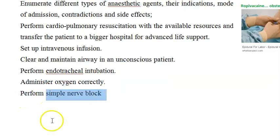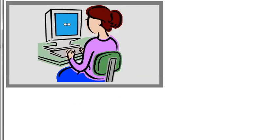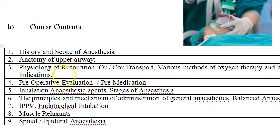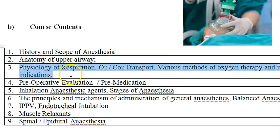You should be able to perform simple nerve block. Now the course content — the syllabus: history and scope of anesthesia, anatomy of upper airway, then physiology of respiration, carbon dioxide, oxygen transport, various methods of oxygen therapy — this one you should know.